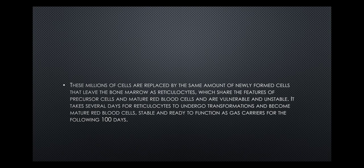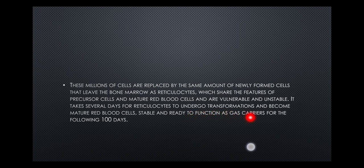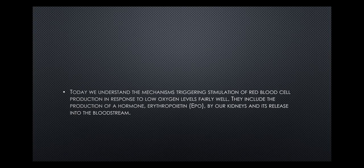These millions of cells are replaced by the same amount of newly formed cells that leave the bone marrow as reticulocytes, which share features of precursor cells and mature red blood cells, but are vulnerable and unstable. It takes several days for reticulocytes to undergo transformations and become mature red blood cells — stable and ready to function as gas carriers for the following hundred days, which is how long each cell lives.